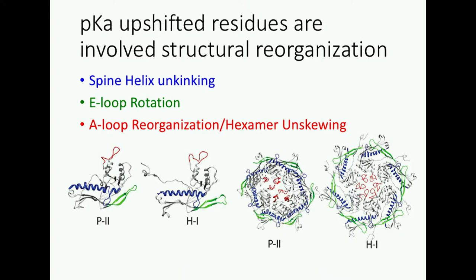Additional residues with downshifted pKas include glutamic acid residues located at the threefold axis, forming what's termed the 'threefold staple' — a series of salt bridges between protomers at the threefold axis. Mutating these also prevents assembly, confirming importance for stability. Now for residues important for mediating structural changes, we focus on the three highlighted structural motifs: the spine helix, the e-loop rotation, and the hexamer reorganization.